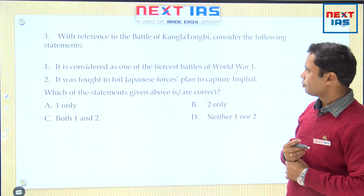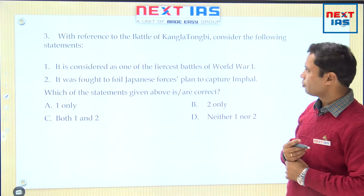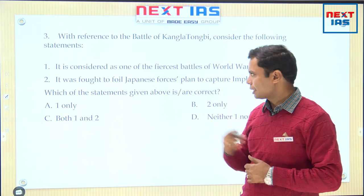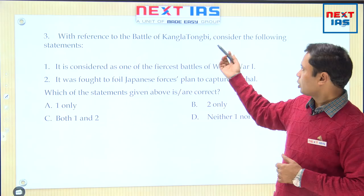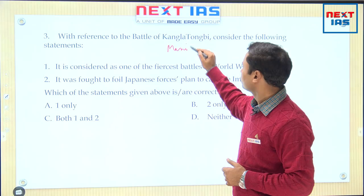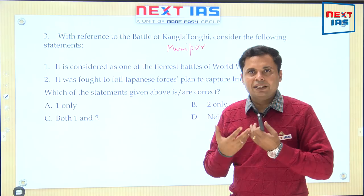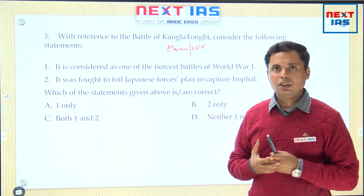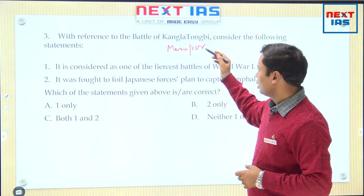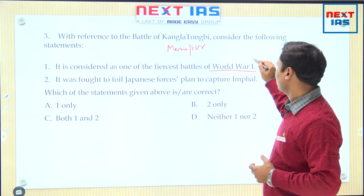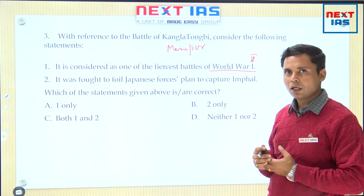Moving to the next question, number three: with reference to the Battle of Kangla Tungbi, consider the following statements. It is considered one of the fiercest battles of World War I — and second, it was fought to foil Japanese forces' plan to capture Imphal. Kangla Tungbi lies in Manipur. As I was discussing in the first question, the Japanese were advancing fast towards India in World War II and had reached the northeastern borders, attempting to capture Imphal. This Kangla Tungbi battle was fought in World War II, not World War I.